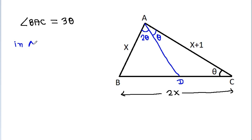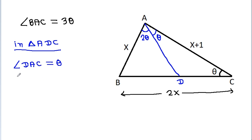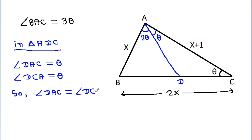Now in triangle ADC, angle DAC is θ and angle DCA is θ. So angle DAC is equal to angle DCA, hence DA will be equal to DC.